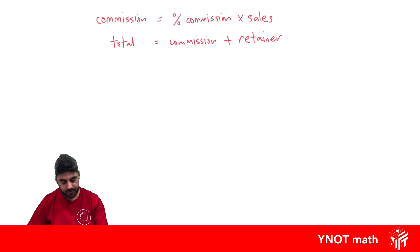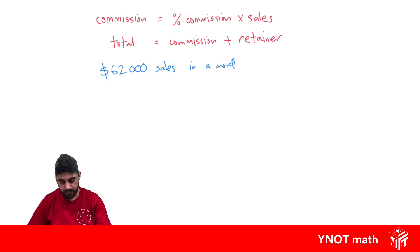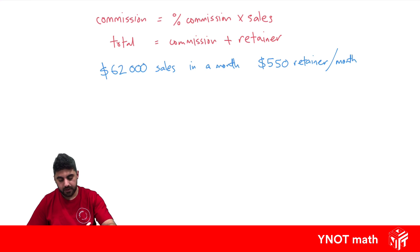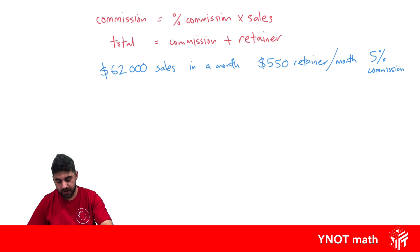Let's look at some examples. Let's say you're a car salesman and you sell $62,000 worth of cars — those are your sales in a month. You get a $550 retainer every month, which is what you're guaranteed to earn, and the agreed-upon commission rate is five percent. We want to find out how much you earn in a month.